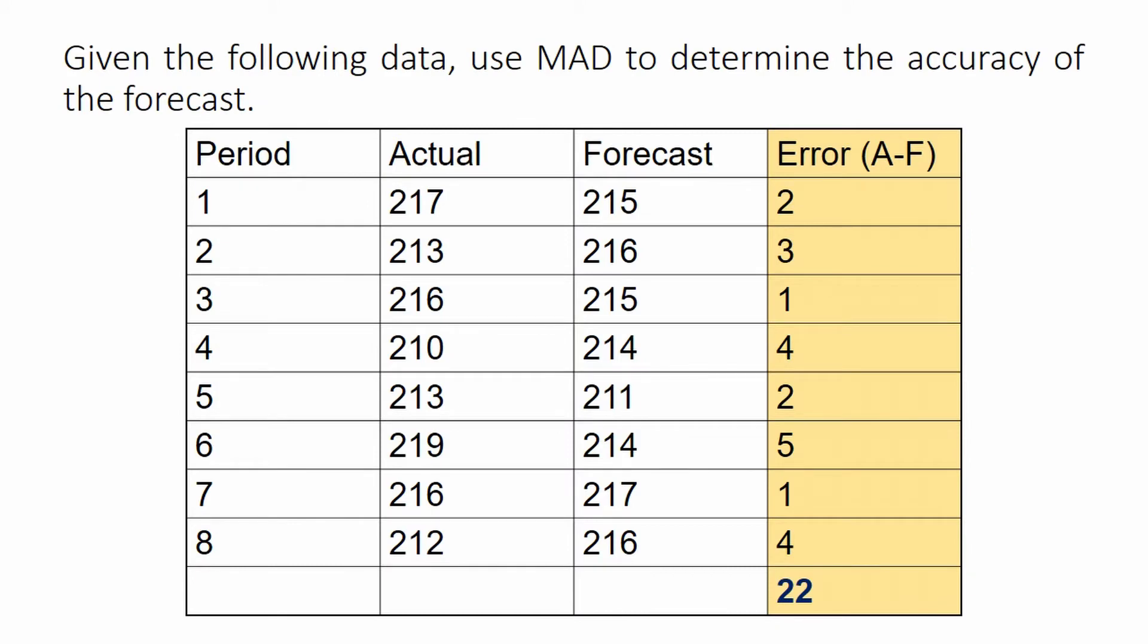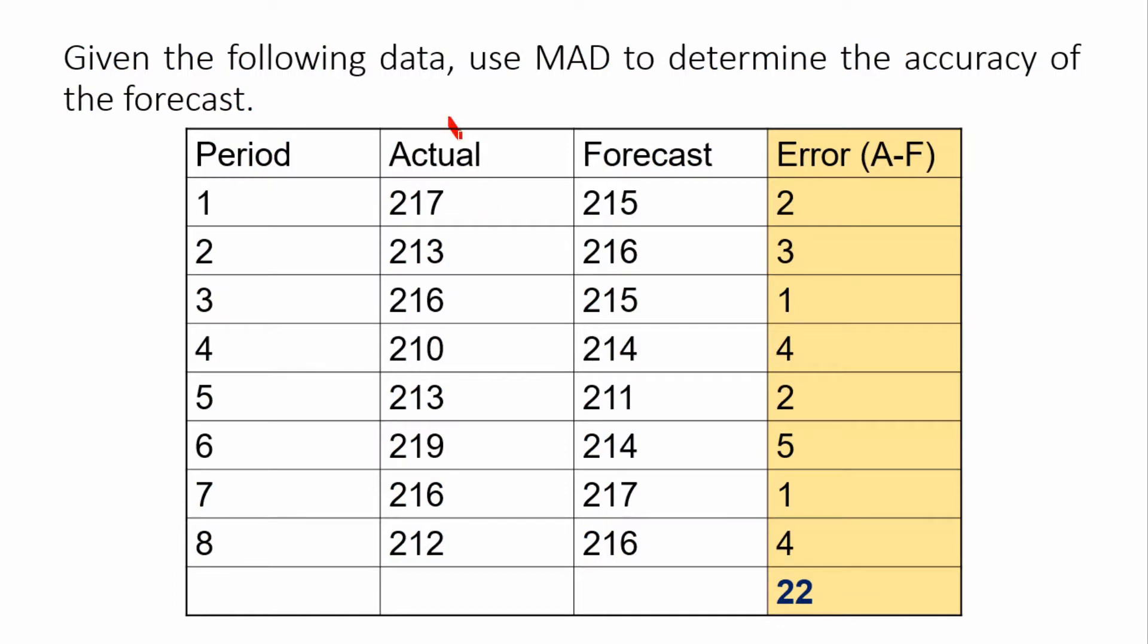In this table, for example, we subtract data from the actual column with data in the forecast column. For instance, 217 minus 215 equals 2. Do the same for the following data.